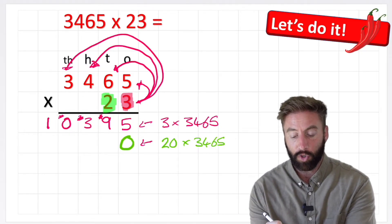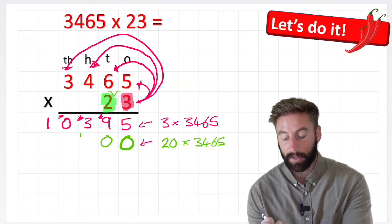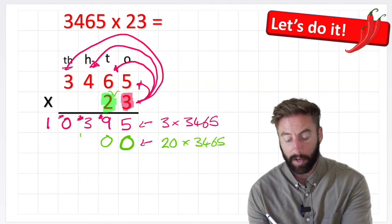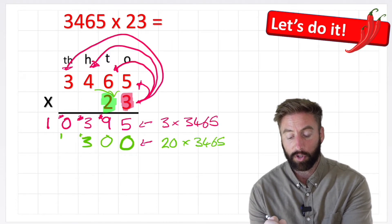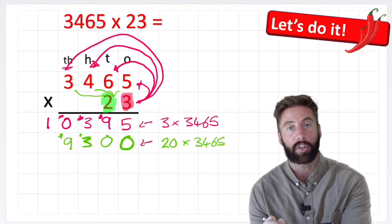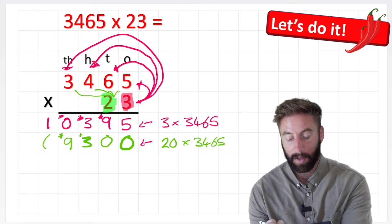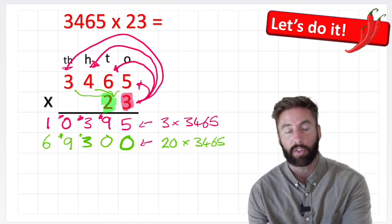Now I don't need to think about multiplying by 20, I can just multiply it by 2. 2 times 5 is 10, same rules. Next I can do 2 times 6 which is 12, plus my 1 equals 13, get rid of the 1. Now I can do 2 times 4, 2 times 4 is 8, plus my 1 is 9, get rid of the 1. And lastly, 2 times 3 is 6. So the answer to 20 times 3465 is 69,300.